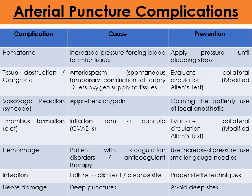Gangrene can occur due to arterial spasm, causing oxygen deprivation to tissues. Prevention is to evaluate collateral circulation first. Thrombus formation or irritation from a cannula also requires evaluation of circulation. Hemorrhage may occur if the patient has a coagulation disorder — increase pressure accordingly. Nerve damage may occur because of a deeper-than-necessary puncture, so avoid excessively deep puncture sites.